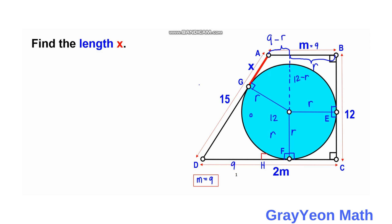We connect point A to the center of the circle. In the right triangle formed, the legs are 9 minus R and 12 minus R. For the other right triangle, the legs are X and R. Both triangles share a common hypotenuse — the distance from the center of the circle to point A — which we call H.